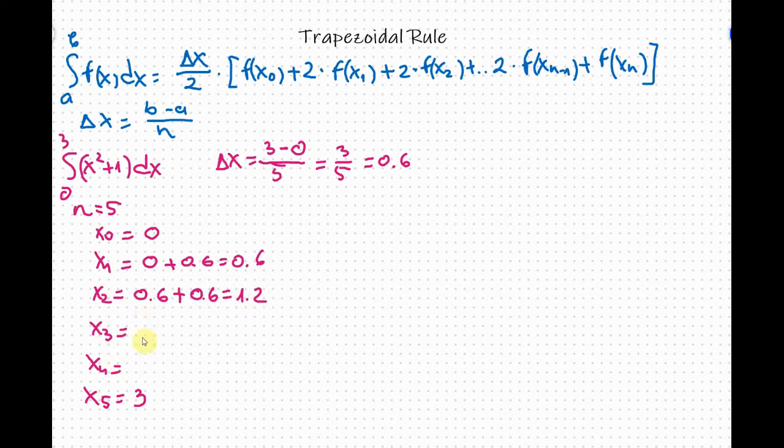For x sub 3 we have 1.2 plus 0.6 equals 1.8 and 1.8 plus 0.6 is 2.4. And now you can see if you sum 2.4 plus 0.6 you will get the x sub 5 value or 3.